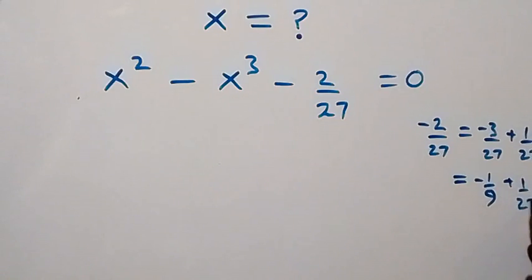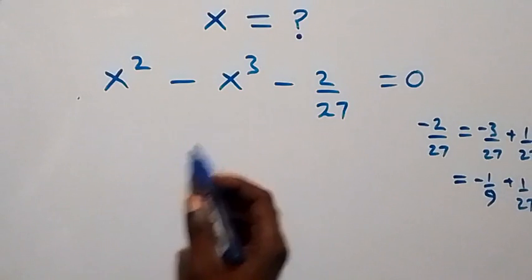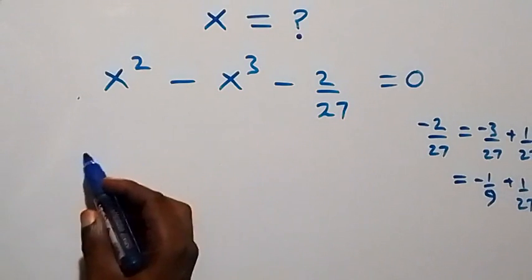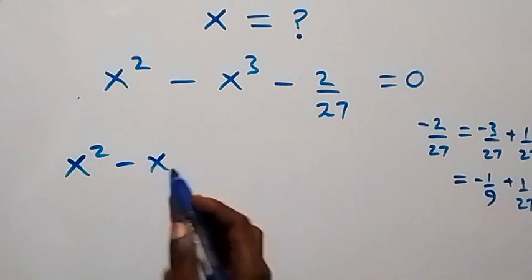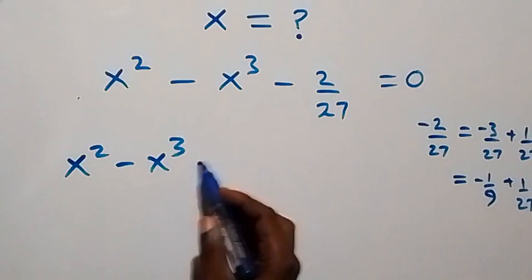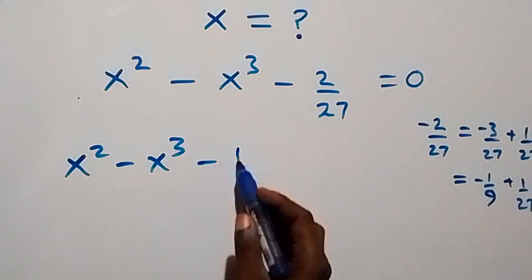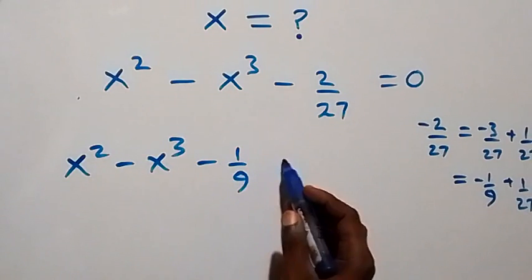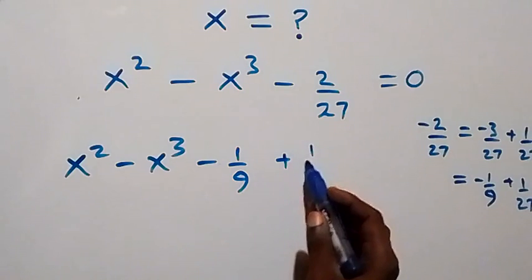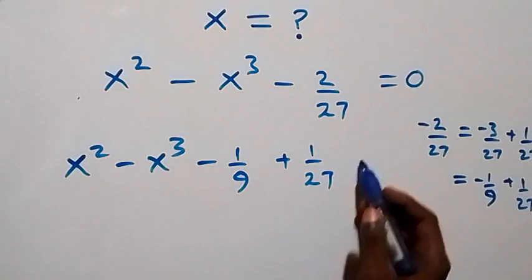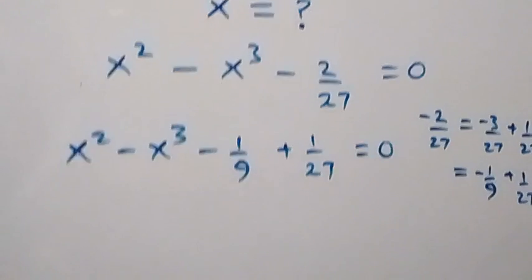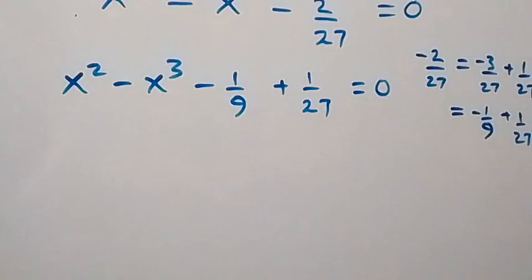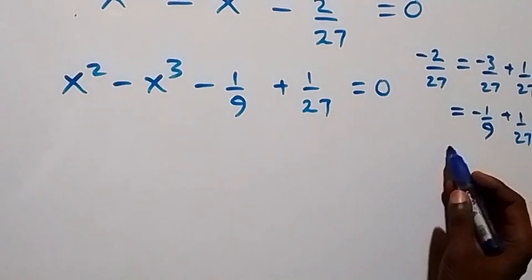Plus 1 over 27. So what we have here can be written as x squared minus x cubed minus 1 over 9 plus 1 over 27, now equals zero.